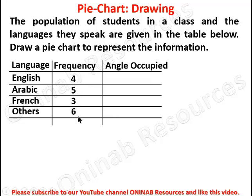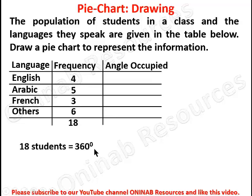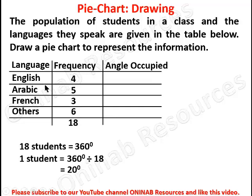We add 6 plus 4 gives 10, plus 8 gives 18. So we have a total of 18 students. We know the angles of a pie chart sum to 360 degrees. So 18 students equals 360 degrees, and one student will be 360 divided by 18, which gives us 20 degrees per student.